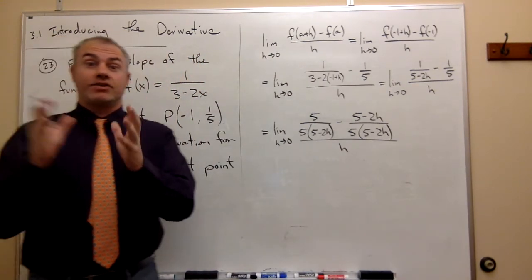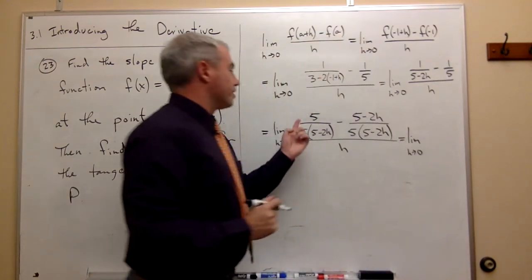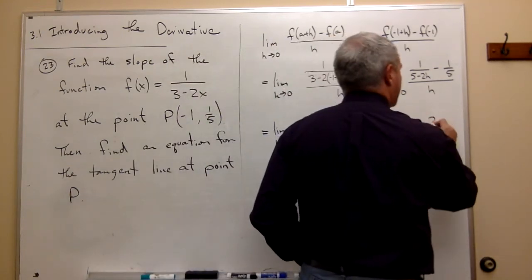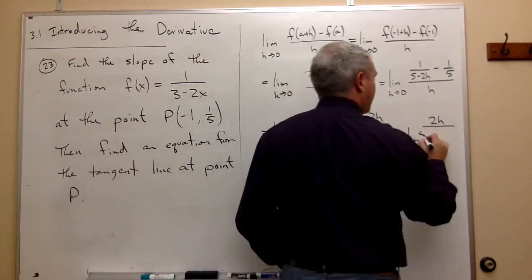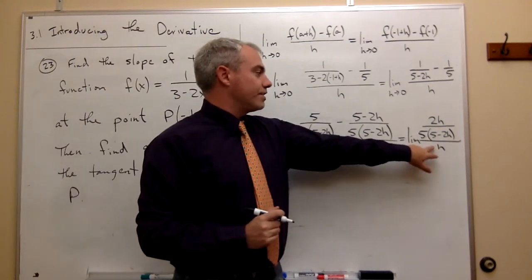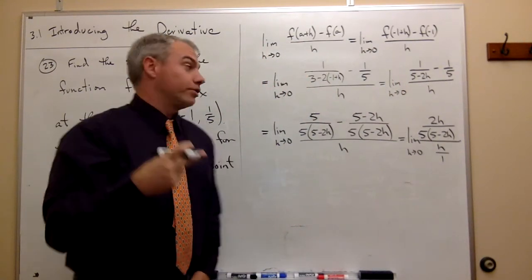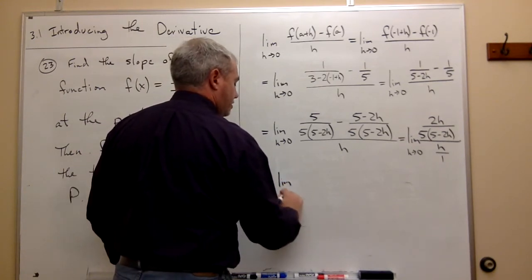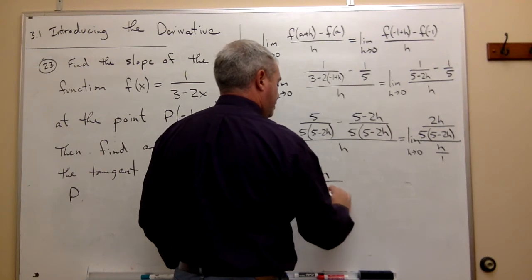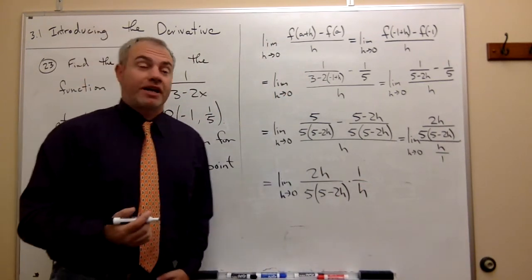If I combine those two into one fraction, on top I get 5 minus 5, which is 0, and then minus minus 2h, which is positive 2h, divided by 5 times 5 minus 2h, all over h. Since h is h over 1, I flip and multiply the fractions, giving the limit as h goes to 0 of 2h over 5 times 5 minus 2h, times 1 over h. There's an h on top and an h on the bottom, so the h's cancel.